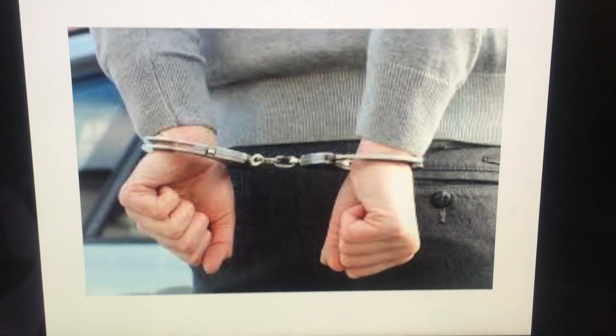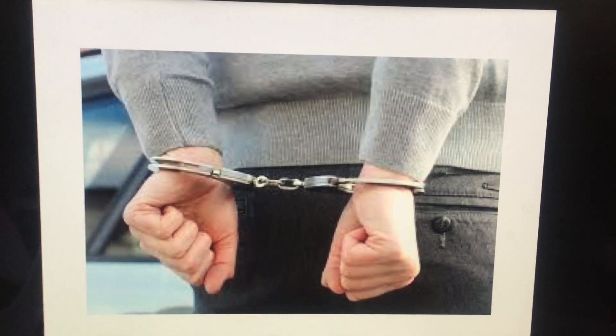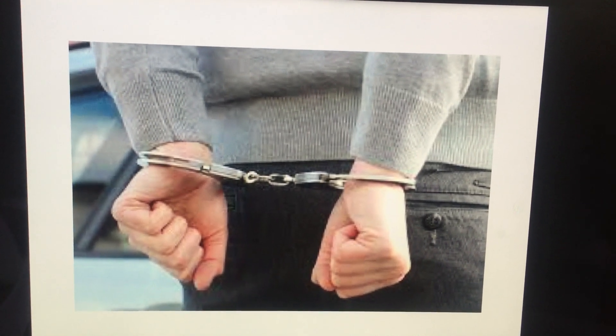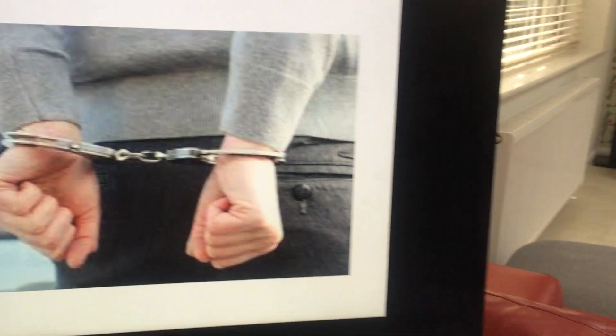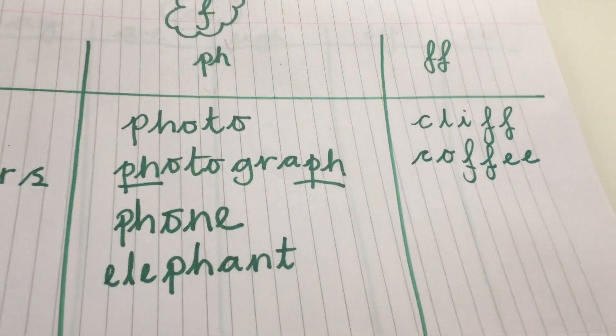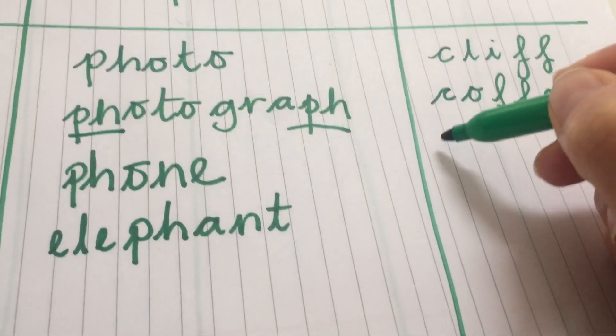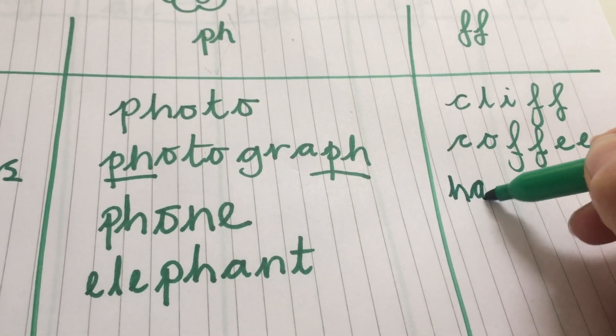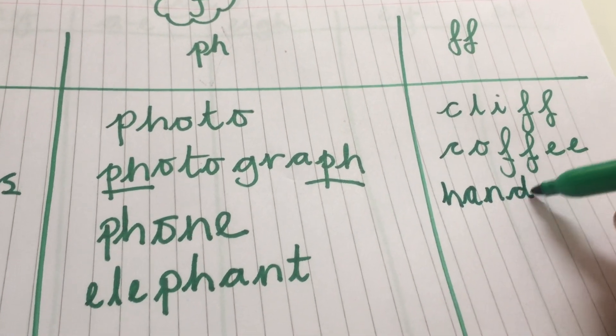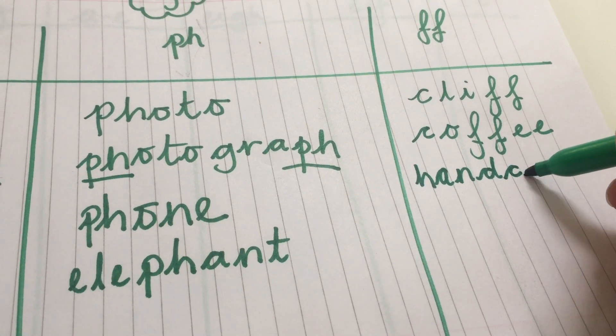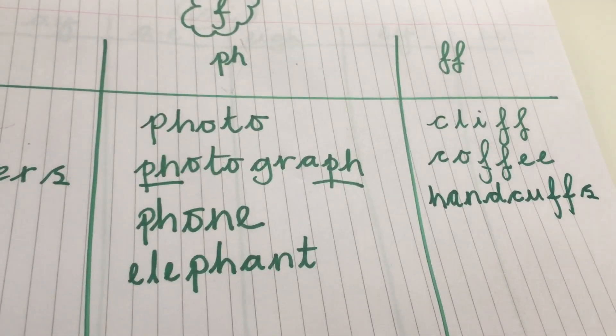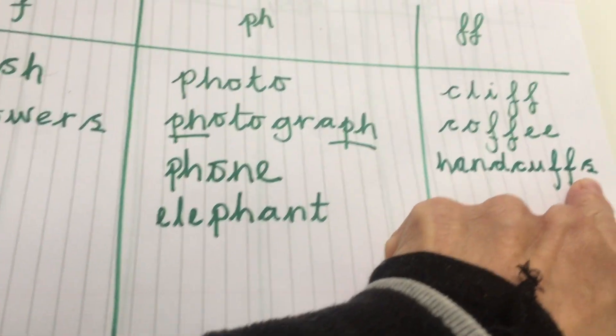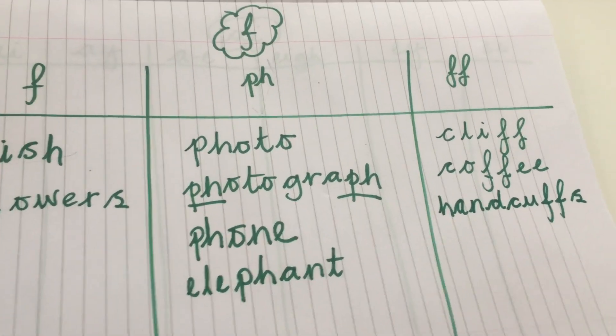Let's see if there's any more pictures. Oh, this man's got some handcuffs on. And the sound, the F, the cuff, the F sound is in the cuffs. So it's a double F in handcuffs. So we're going to write the word hand first: H-A-N-D. And then we're going to write the word cuffs: C-U-F-F-S. Two cuffs. Again, so it's got the S at the end, making it plural.